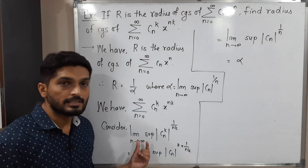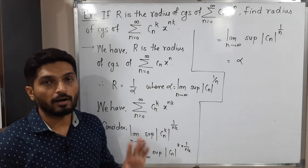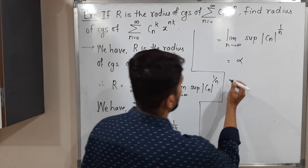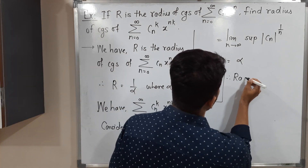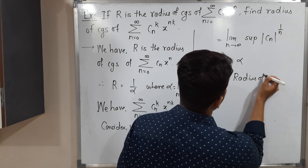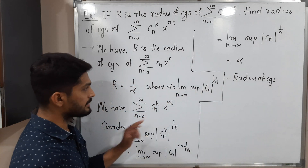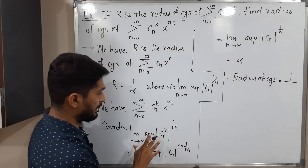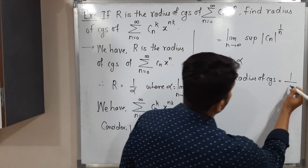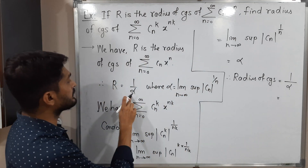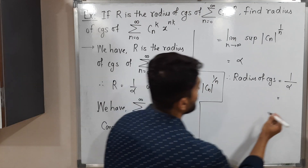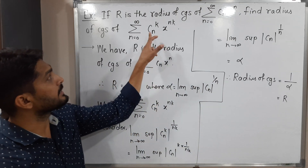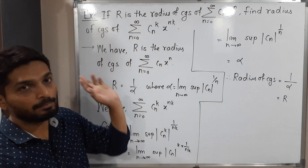We have seen this limit before and its value is alpha. So finally, the value of this limit is alpha, and the reciprocal of this limit is the radius of convergence. Therefore, the radius of convergence of this power series is 1 by alpha, and since 1 by alpha equals capital R, this equals capital R.